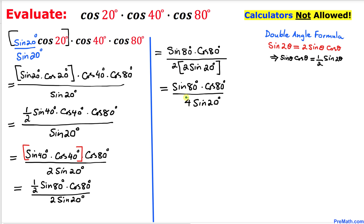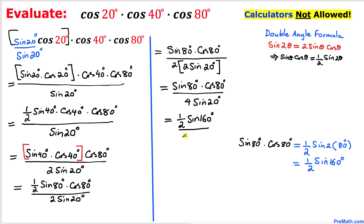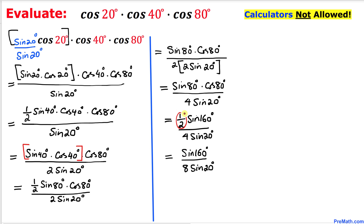Now let's focus on the numerator again. We apply the double angle formula once more: sine of 80 degrees times cosine of 80 degrees can be written as one-half times sine of 160 degrees. So the numerator becomes one-half times sine of 160 degrees, divided by 4 times sine of 20 degrees. Bringing the one-half down to the denominator, 2 times 4 becomes 8.